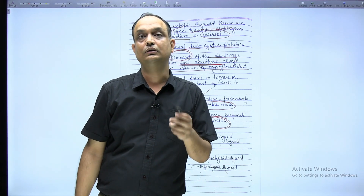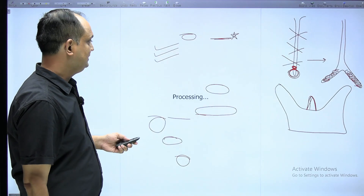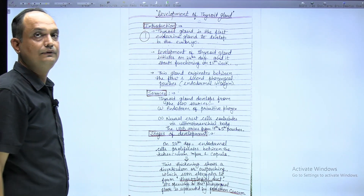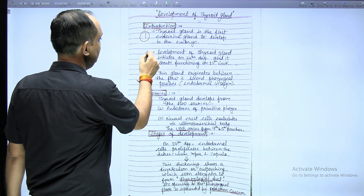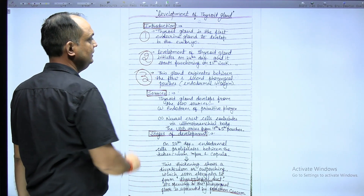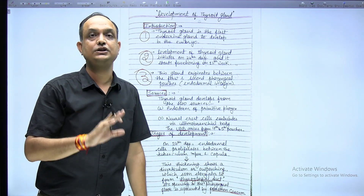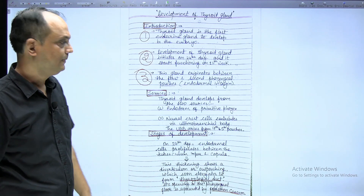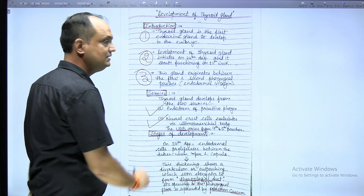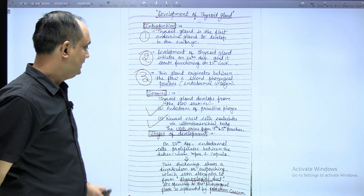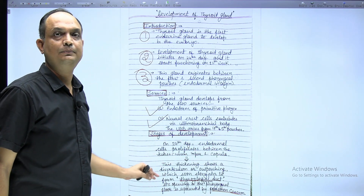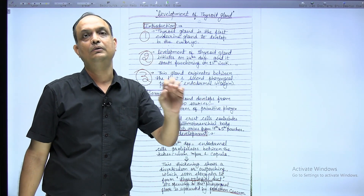When writing a short note on the development of the thyroid gland, let us revise. First, start with the introduction: write that this gland is the first gland to develop in the embryo; its development starts on the 24th day and functioning starts on the 12th week; and this gland originates from the first and second pharyngeal arches, meaning it is endodermal in origin. Second, for the source, write two points: endoderm of the pharyngeal pouch, and neural crest cells which have been invaginated into the ultimobranchial body. Then write the steps of development: first there is formation of the primordial thyroid, meaning proliferation occurs between the tuberculum impar and copula.